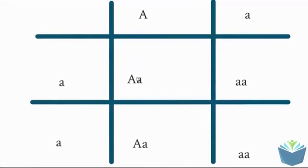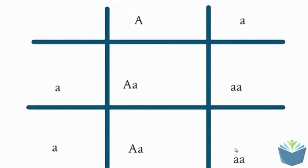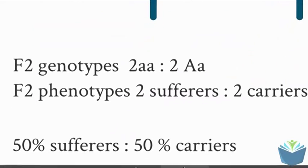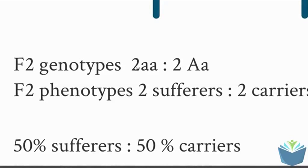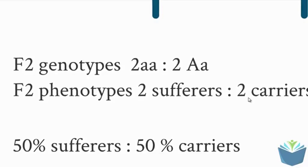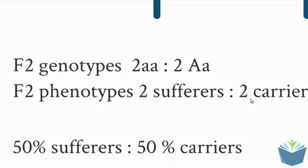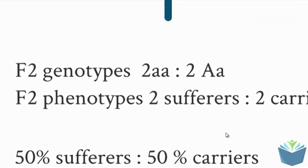So what you have here are two carriers and two sufferers. So the F2 genotypes, that gives you two sufferers, two carriers and so the phenotypes for that will be two sufferers and two carriers. So the likely outcome is if they have two kids, you would expect one of them to be a sufferer and the other to be a carrier for this disease.